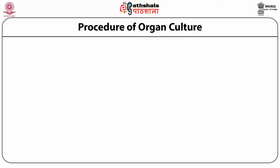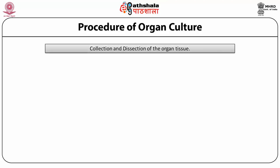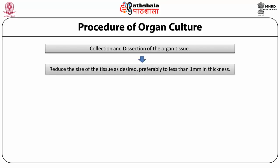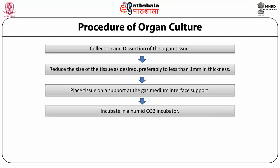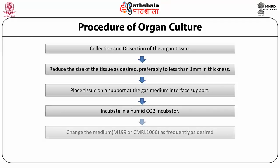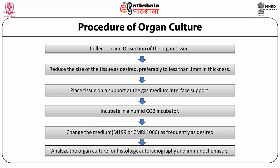Procedure for organ culture: first, collect the organ tissue and dissect it, then reduce the size of tissue as desired — preferably less than one millimeter in thickness. Place the tissue on a support at a gas-medium interface. Then incubate in a humid CO2 incubator. Change the medium using M199 or CMRL10666 as frequently as desired. After culturing, organ culture can be analyzed by histology, autoradiography, and immunochemistry.